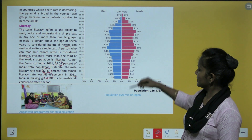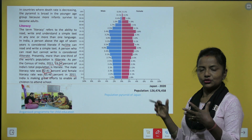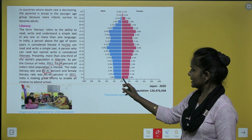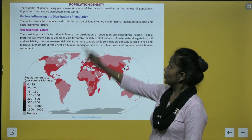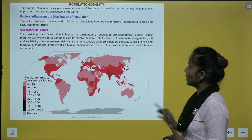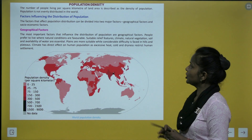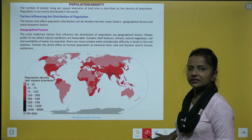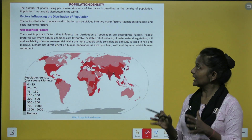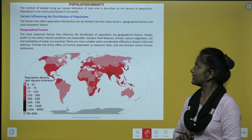Japan's population pyramid has a narrow base because its birth rate is low. The number of people living per square kilometre of land area is described as population density. Population is not evenly distributed in the world.